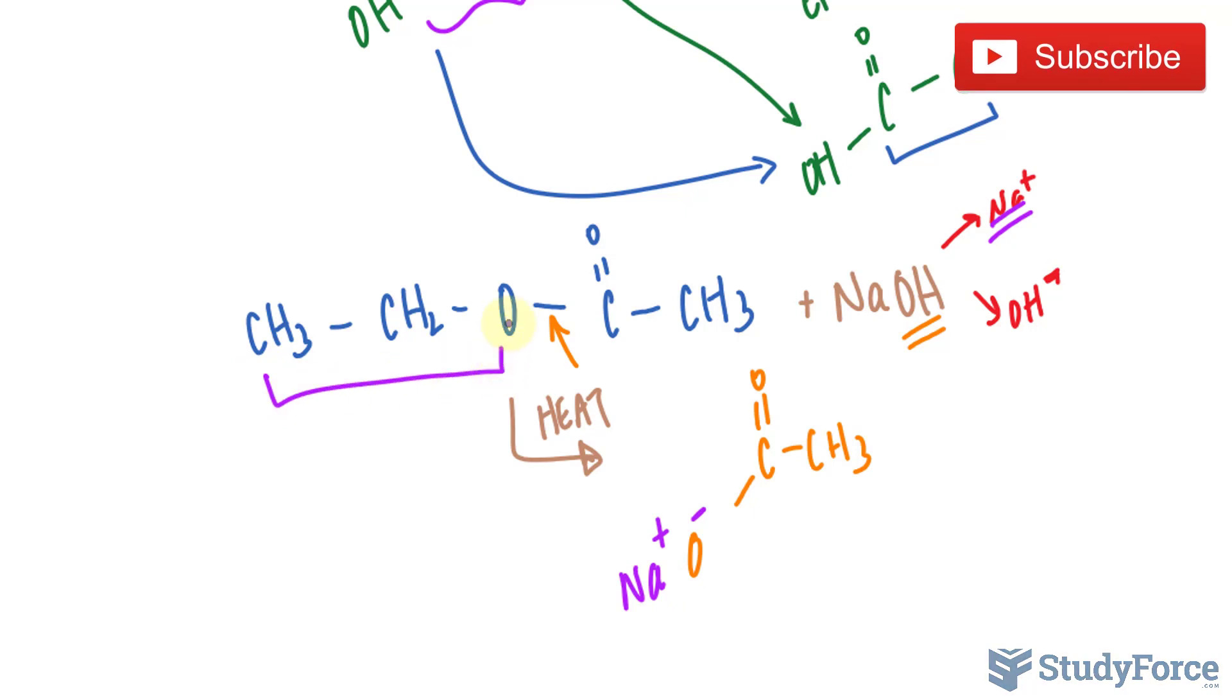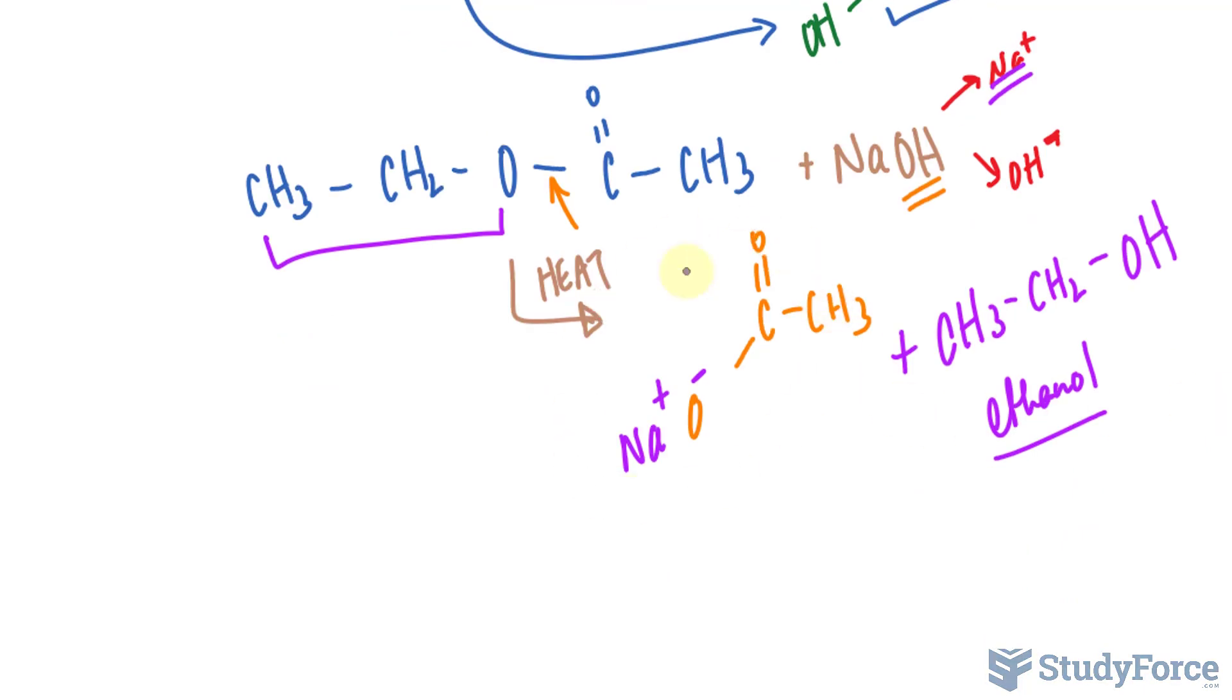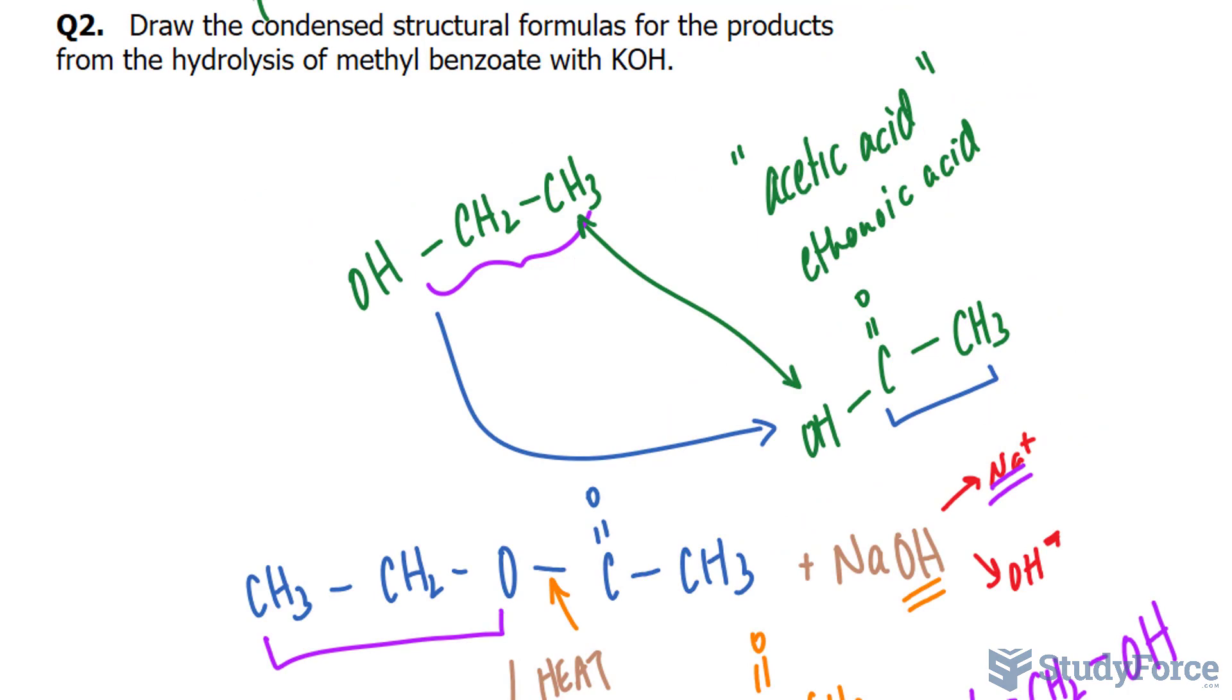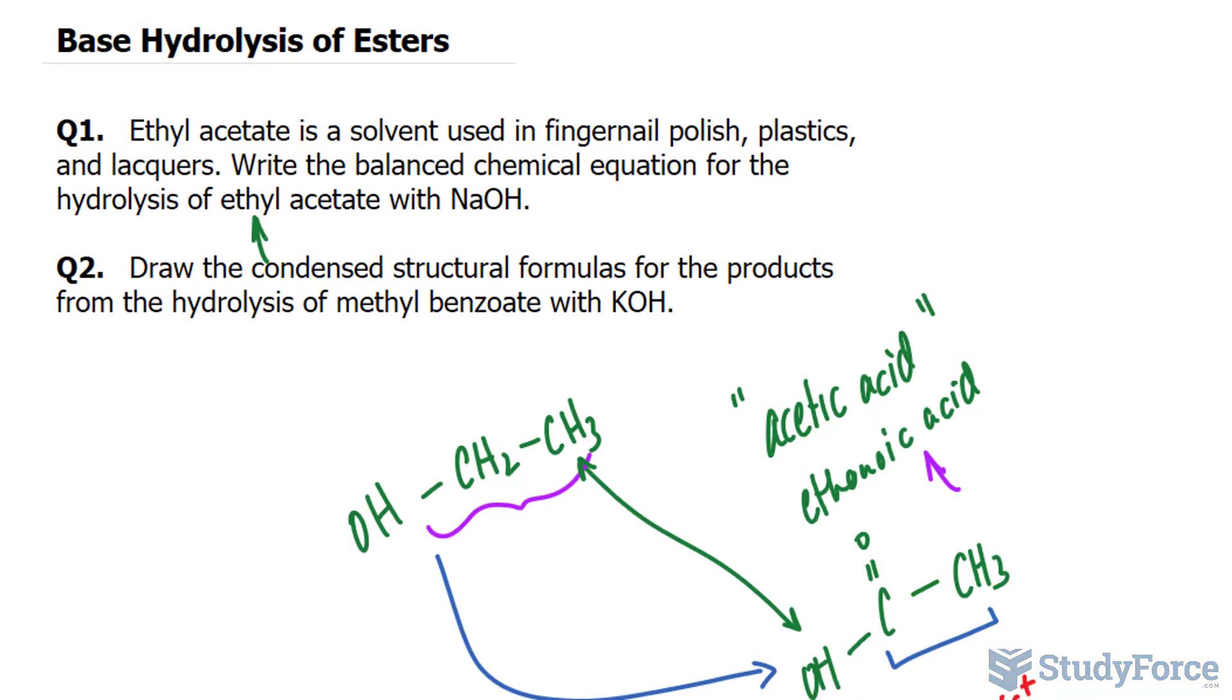This part of the molecule remains as the alcohol. So we have CH3, CH2. Oxygen forms a bond with hydrogen. That's also found in the solution. So we have ethanol forming, and we also have this molecule forming, which we call sodium ethanoate. Remember that ethanoate is the ionic name for ethanoic acid, a carboxylic acid that we had originally here. That's the answer to question number one.